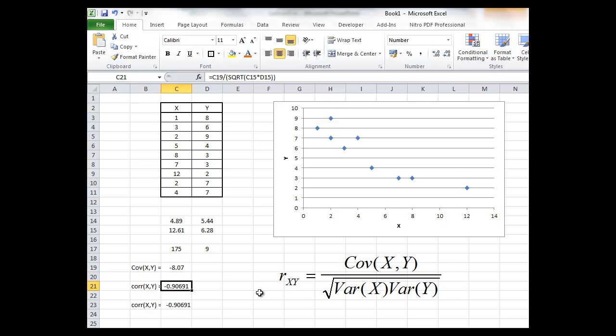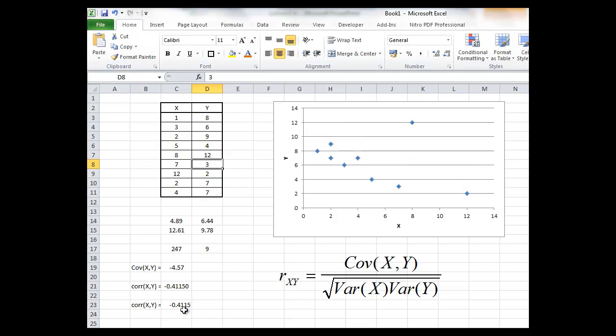That means that this is a strong negative relationship between x and y that we've discovered. Now we could try to see can we weaken that relationship by changing one of the values. So if I change this value here which is selecting this particular cell here up to let's say 12, that weakens the relationship quite a lot. The correlation coefficient comes down to minus 0.4.